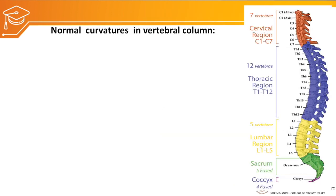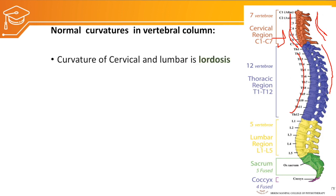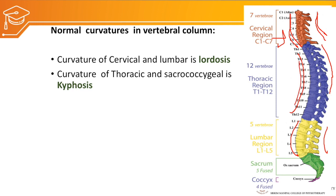What are the normal curvatures of the vertebral column? The cervical vertebra has a convex anterior surface and concave posterior surface, whereas the thoracic vertebra has a concave anterior surface and convex posteriorly. A vertebral column with anterior convexity and posterior concavity is called lordosis, seen in the cervical and lumbar regions. A vertebra with anterior concavity and posterior convexity is called kyphosis, seen in the thoracic and sacrococcygeal regions.